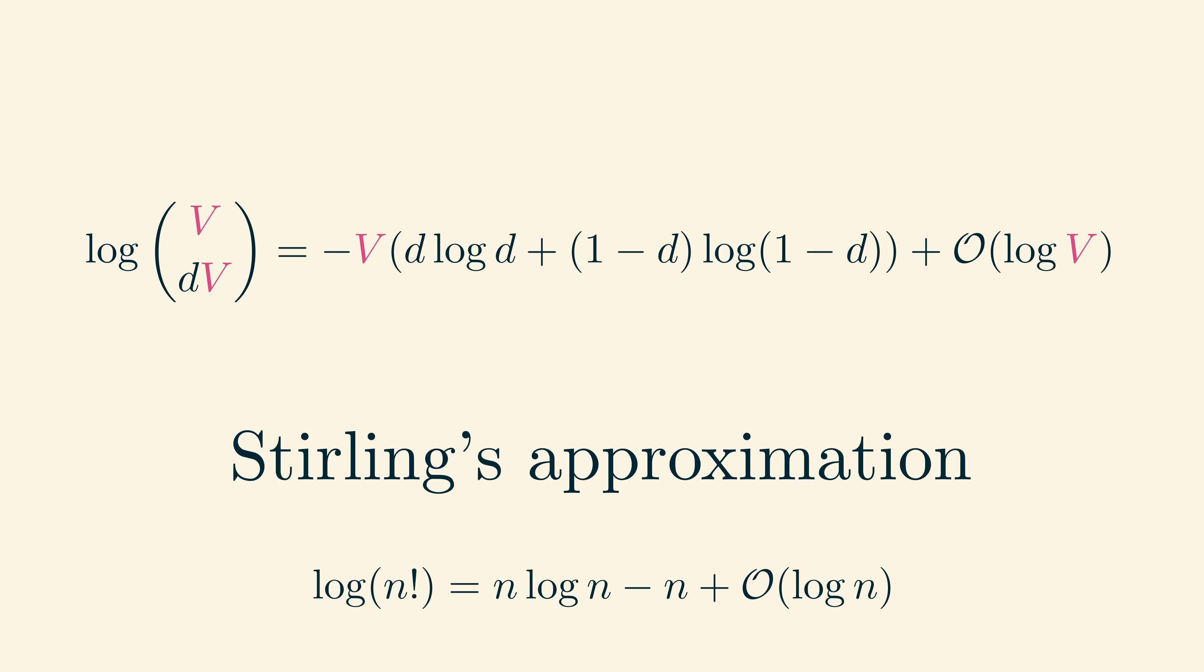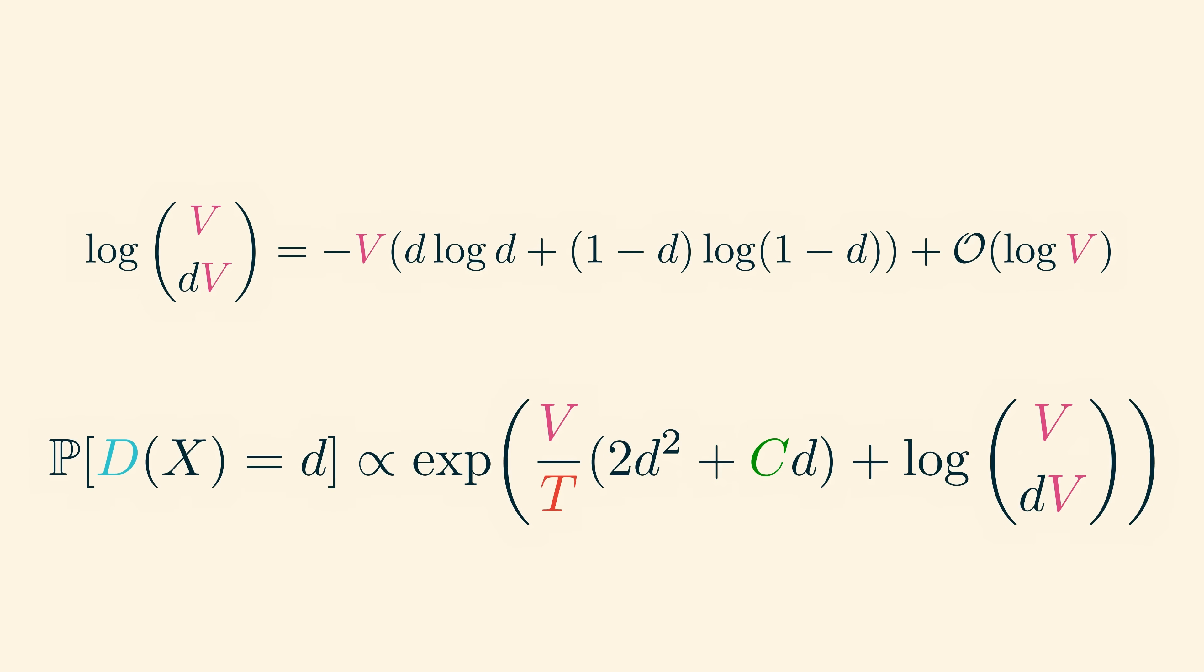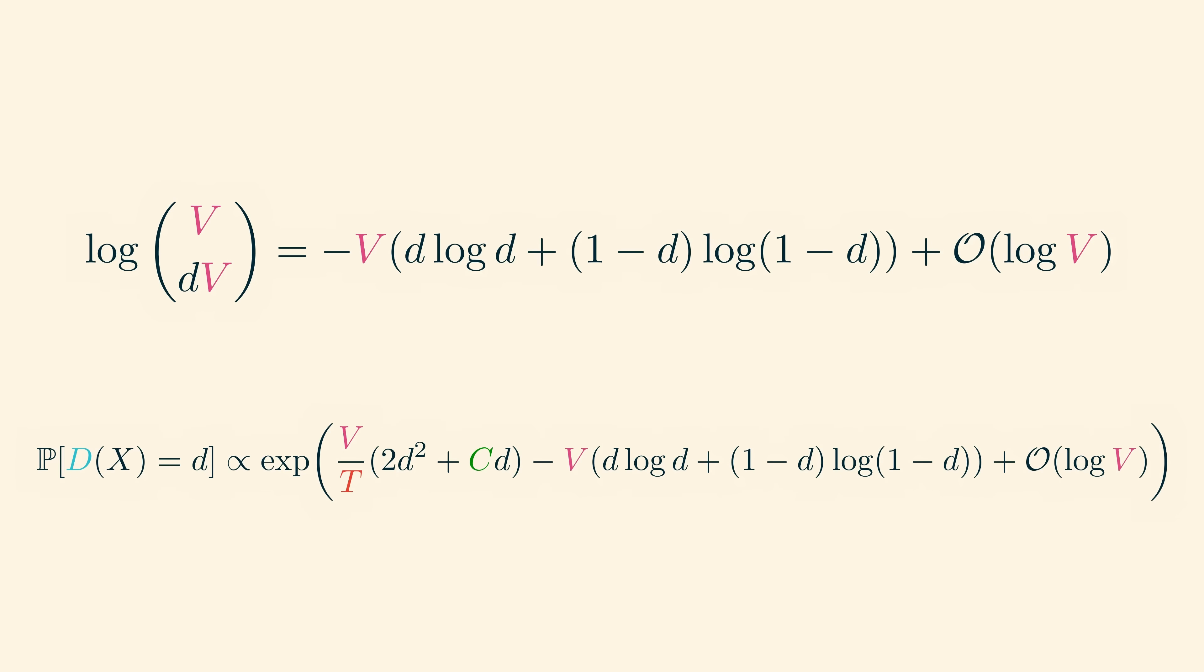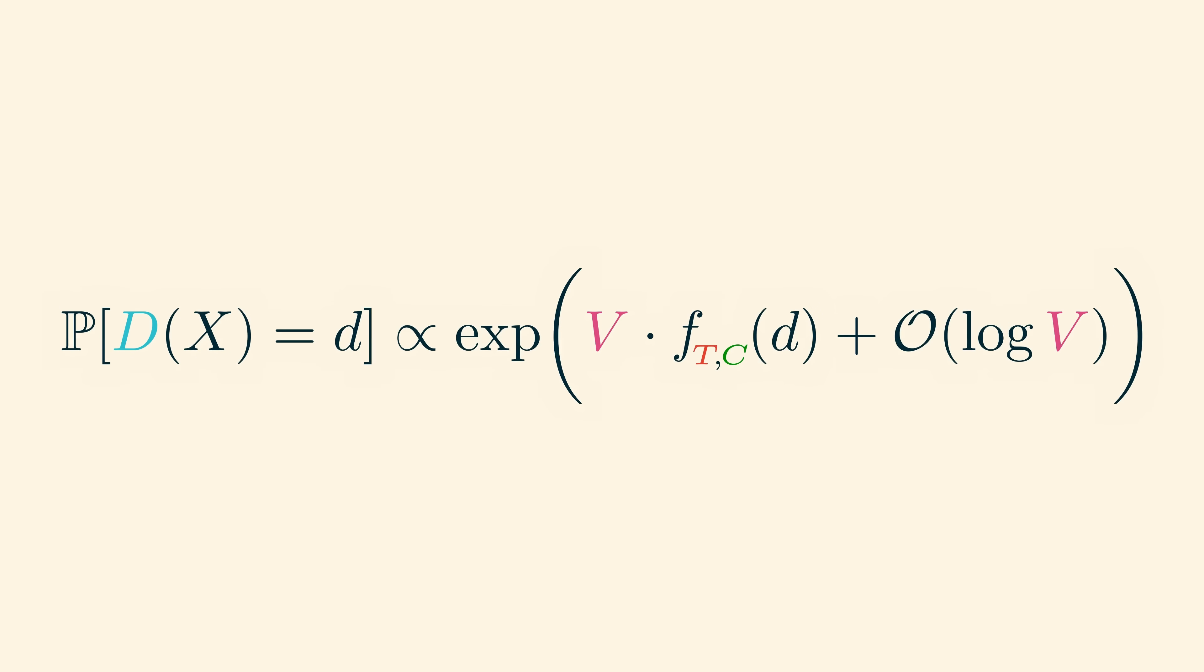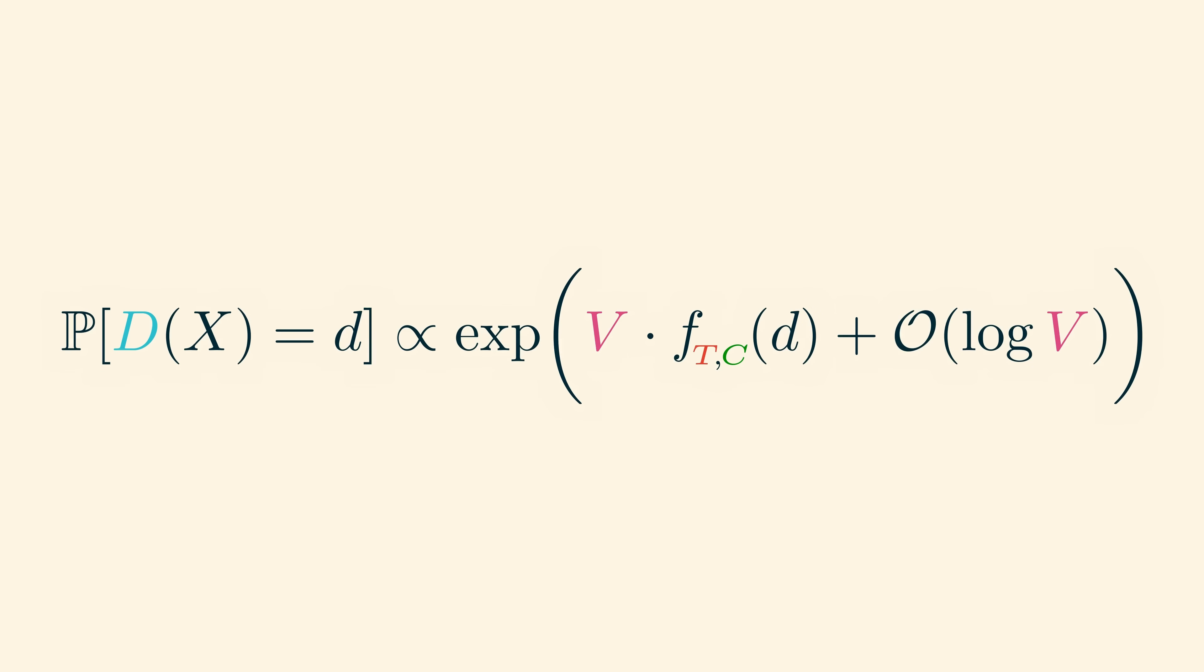Now we can plug this back into the expression we had for the probability that the density of a microstate x from the Boltzmann distribution is d. We can factor out the v from everything inside the exponential and we find that the probability is proportional to the exponential of the volume v times a relatively simple function of the density d plus an error of logarithmic size. Let's call this function f tc of d. Since the logarithmic error is much smaller than v itself, the value of f tc of d gives a good picture of this probability.